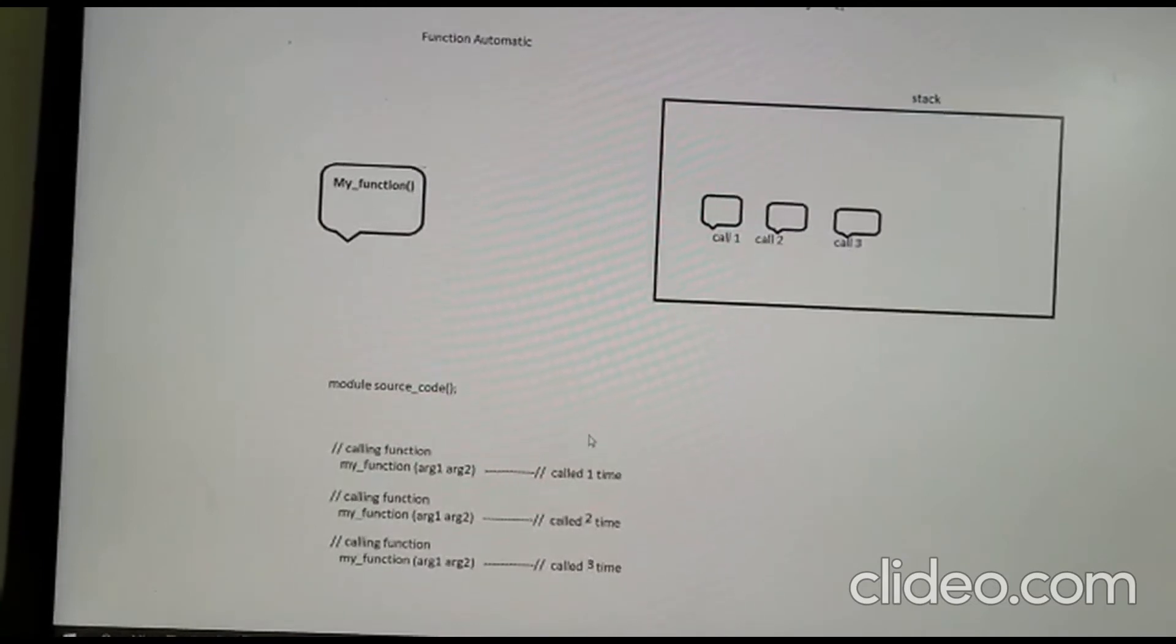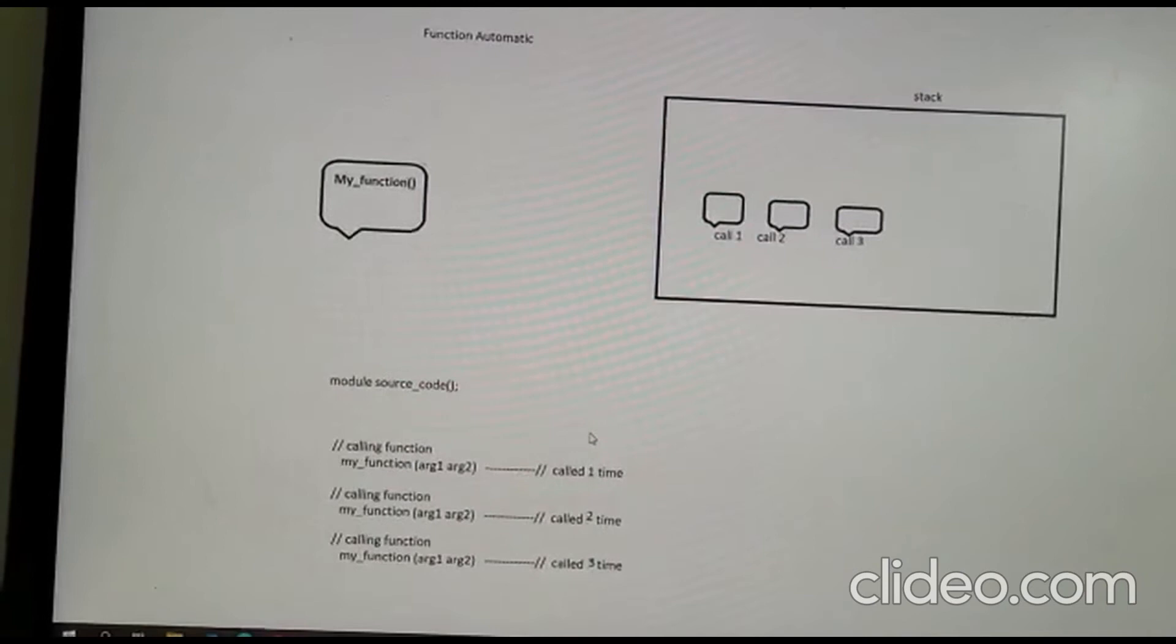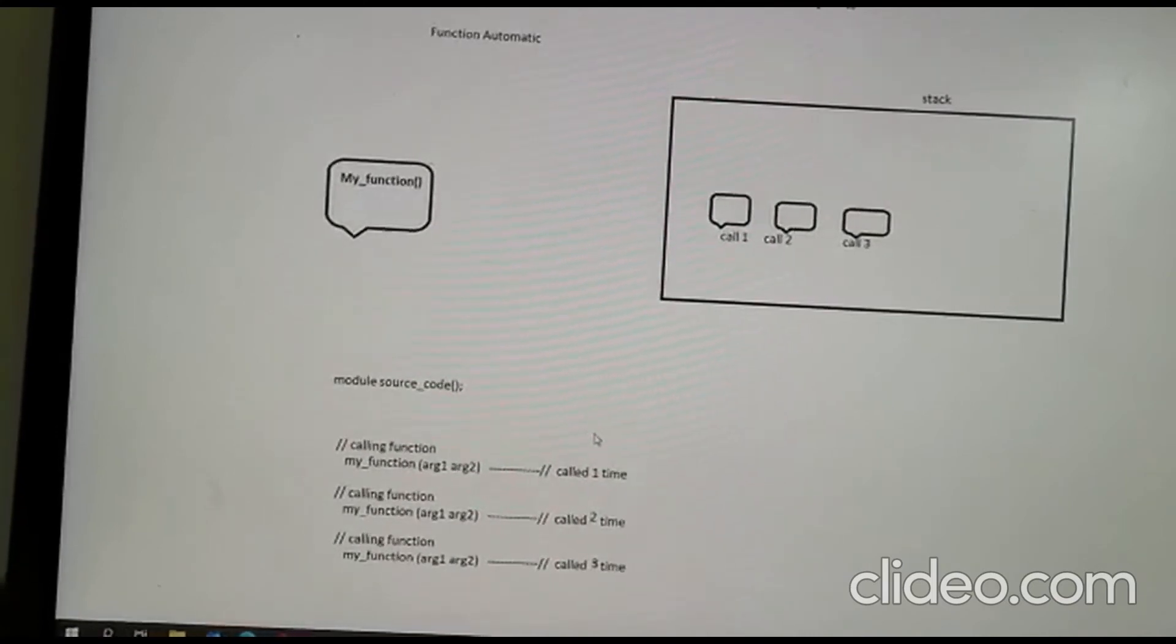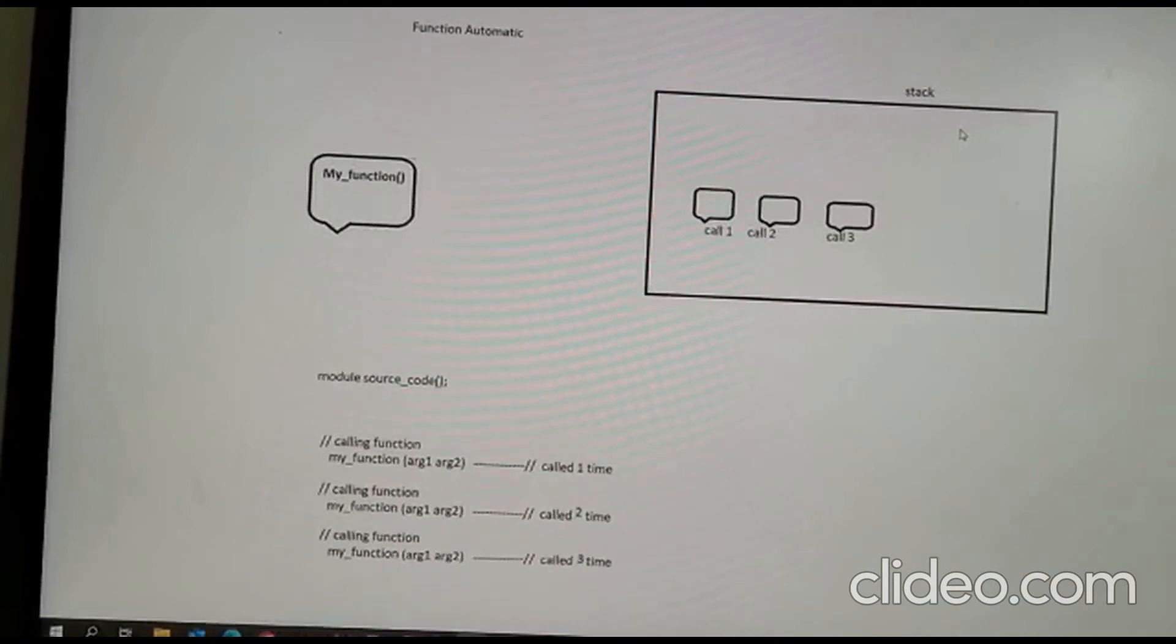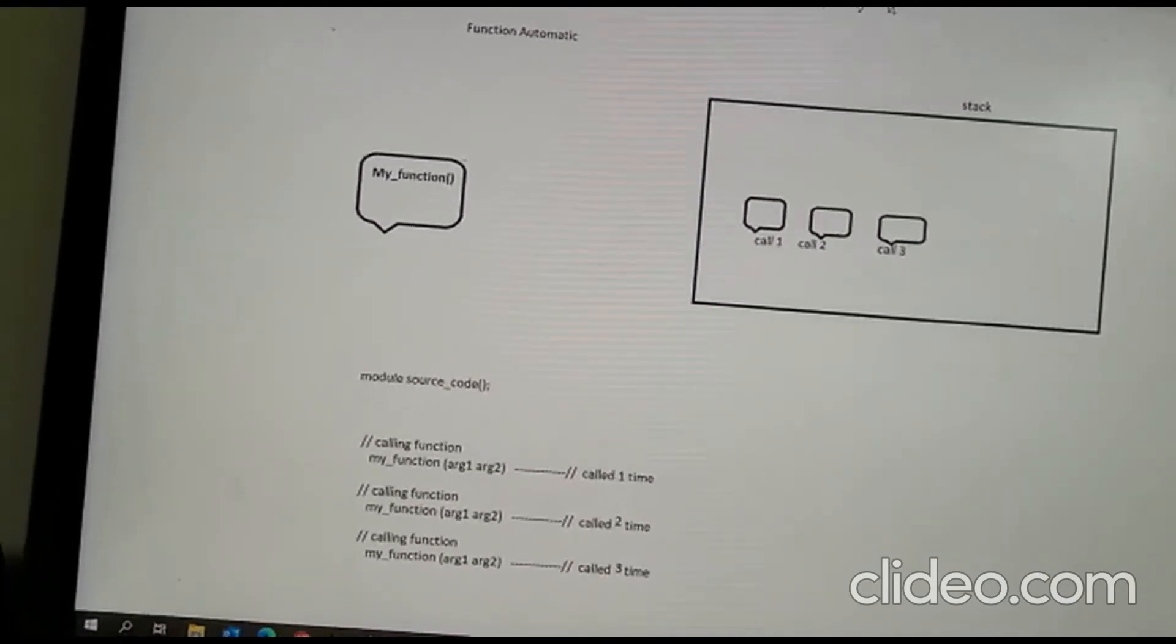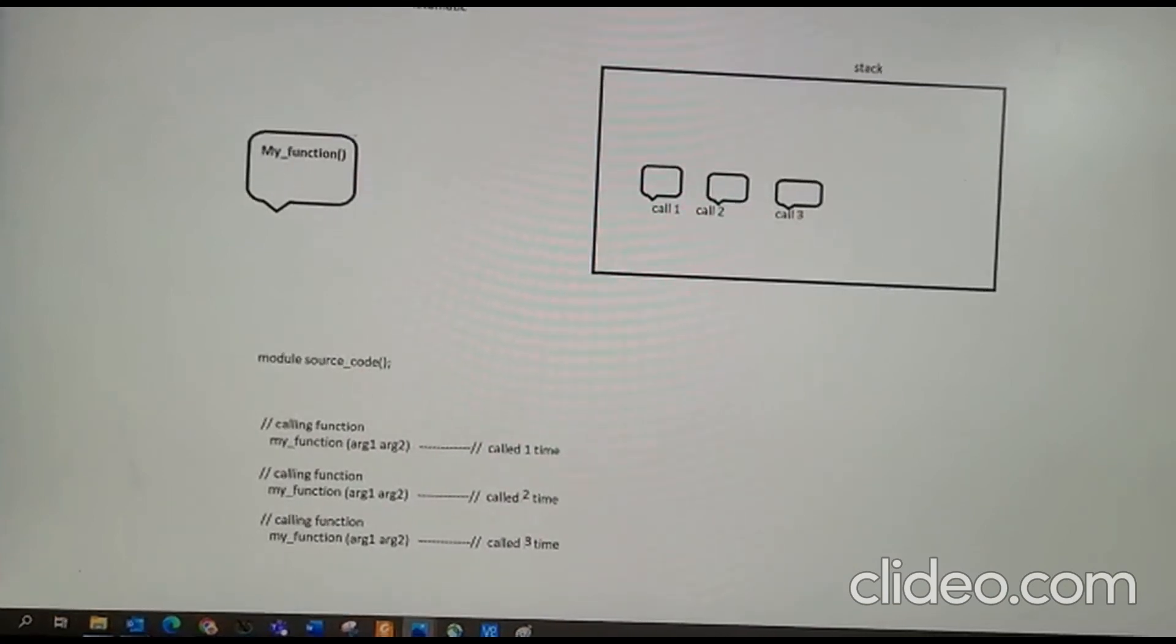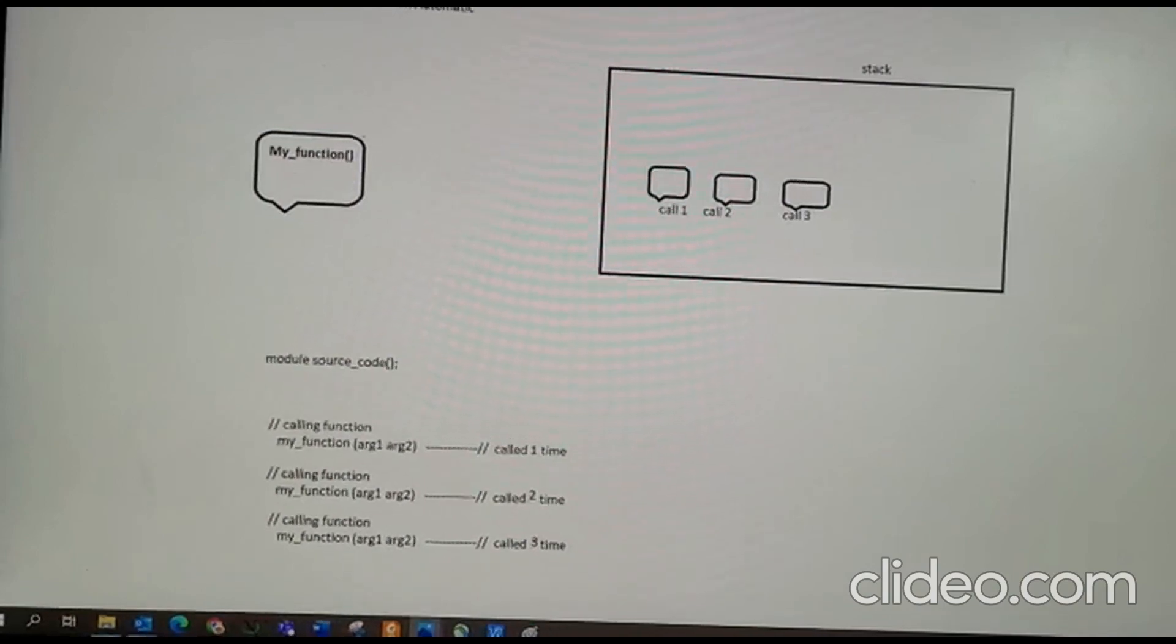To overcome the difficulty with single static memory or static function, we use automatic functions. In the stack it allocates different memory. This confirms that each time the function call is made, it allocates a different stack location.